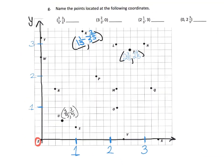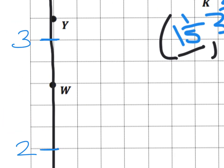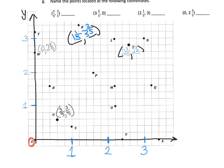Let's do the coordinate pair (zero, two and three fifths) — this one's a little tricky because zero is involved. That zero means the x-coordinate is zero, so the point is located right on the y-axis. The y-coordinate is two and three fifths, which puts us right at W. So W is located at (zero, two and three fifths).